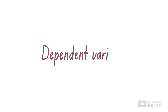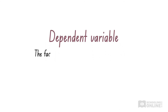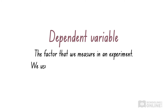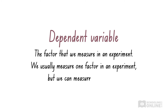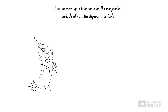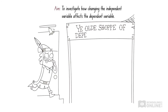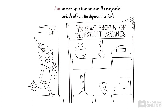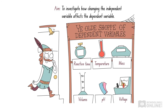Now let's look at the dependent variable. The dependent variable is the factor that we measure in an experiment. An experiment tests how the independent variable affects the dependent variable. Usually there is only one dependent variable, but sometimes it is helpful to have two or more. For an experiment to be valid, we need to make sure we are actually measuring the dependent variable and not some other factor. There are often many different factors we could measure, so we need to pick the most appropriate one for each experiment.